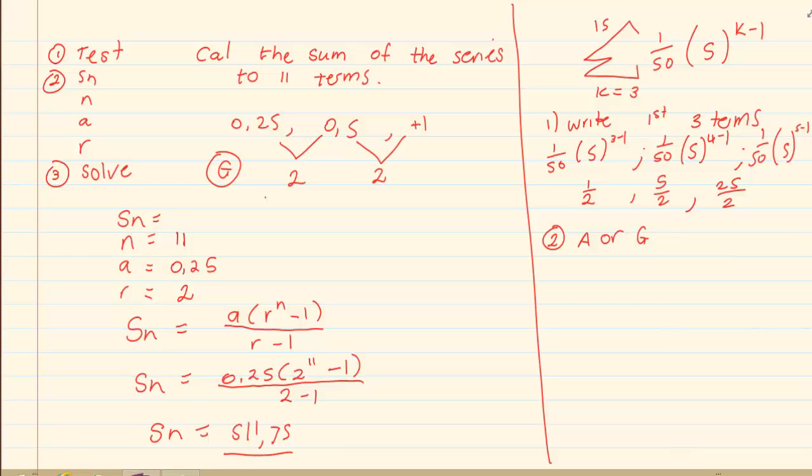We do the test: 5 over 2 divided by a half is equal to 5, 25 over 2 divided by 5 over 2 is 5. So we know it is geometric and our ratio is 5. We need to determine how many terms we have. To determine how many terms we have we say top minus bottom plus 1. In this case it's 15 minus 3 plus 1 which is equal to 13.